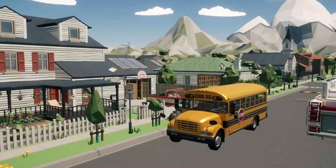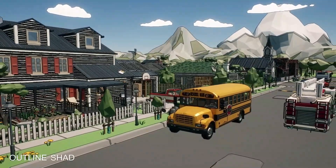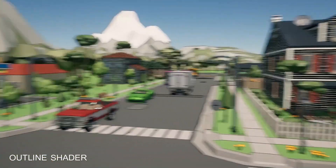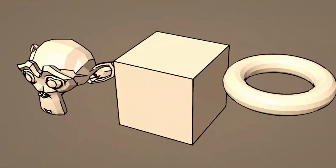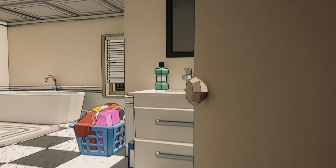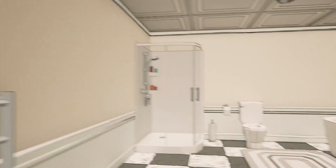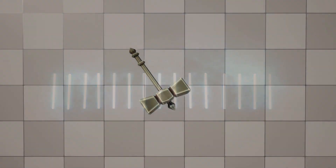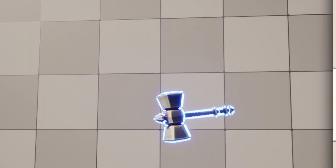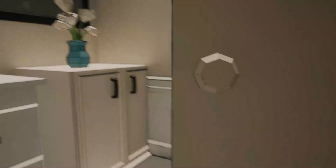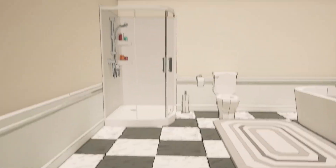Let's move on to another essential shader that I believe any indie dev should have in their library: an outline shader. Outline shaders can instantly alter the look of a game, giving it a distinct stylized appearance that can help differentiate it from others. By emphasizing the edges of the models, it creates a visual pop that is eye-catching and can be adjusted to suit various artistic visions — from thick, bold lines to subtle hints that simply enhance the depth and structure. It can also be used to highlight certain objects to help guide the player. Overall, the outline shader is an incredible tool that you should have in your toolkit.